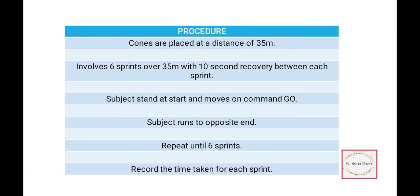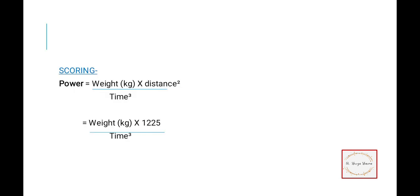For the procedure, cones are placed at 35 meters apart. You put one cone here and at 35 meters you put another cone in a straight line. The athlete takes six sprints with 10 seconds recovery between each sprint. He will run one sprint, rest for 10 seconds, then run the second sprint. Similarly, this continues. After each sprint, he gets 10 seconds rest, then continues to the next sprint.